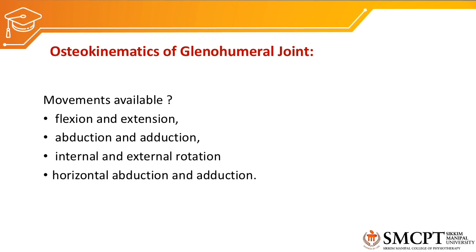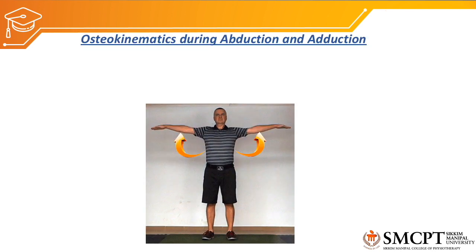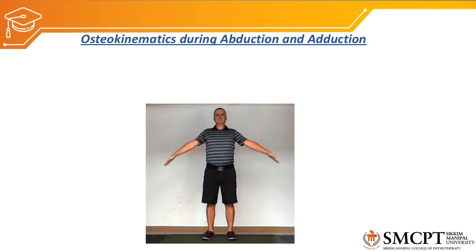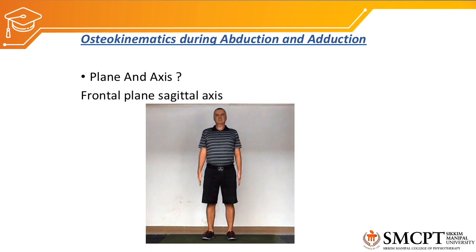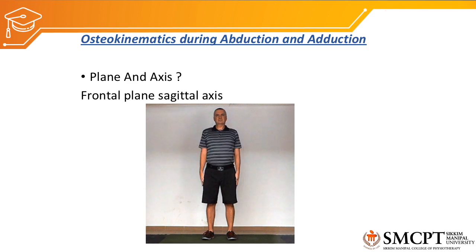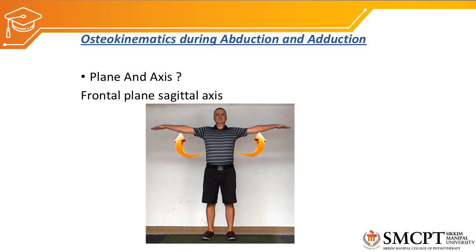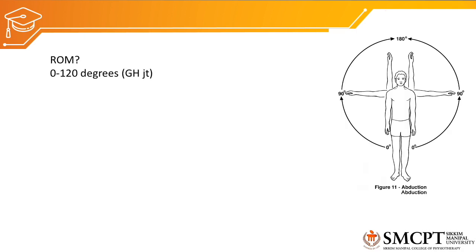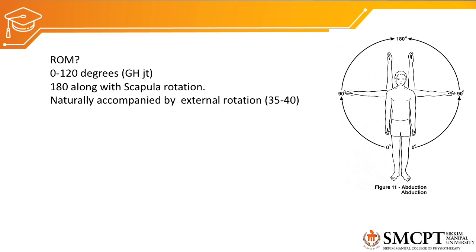Abduction and adduction movement occurs in the coronal plane, also called the frontal plane, and sagittal axis. The range of motion of abduction is 0 to 180 degrees, but at the glenohumeral joint it is 0 to 120 degrees. With the addition of 60 degrees of scapular rotation, a total of 180 degrees can be achieved for shoulder abduction. This shoulder abduction is naturally accompanied by external rotation of 35 to 40 degrees.